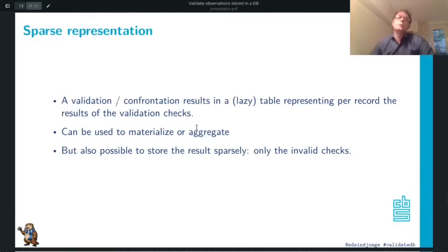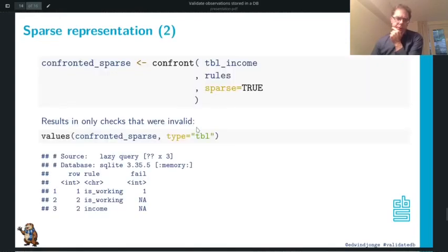There's also a sparse representation. Validation normally results in, for each record, a record describing if it fails or not a validation check. But if you do it in a sparse format, only the failed ones or the missing ones are stored.